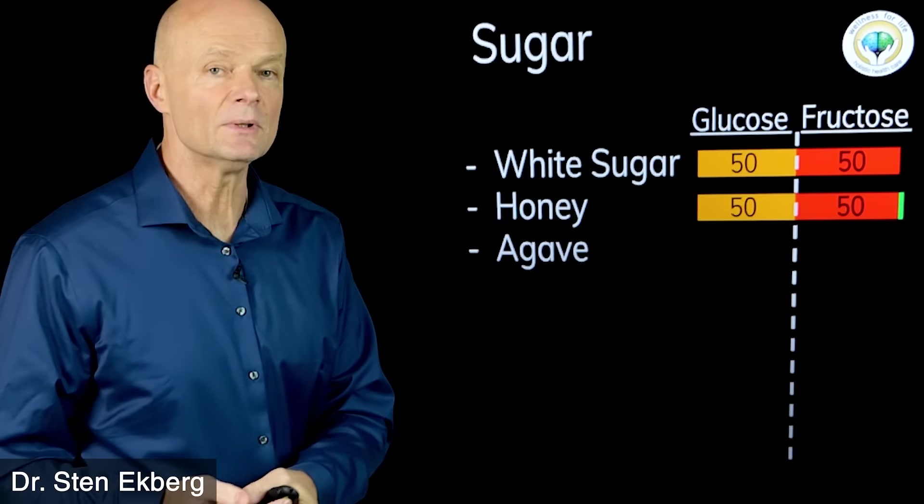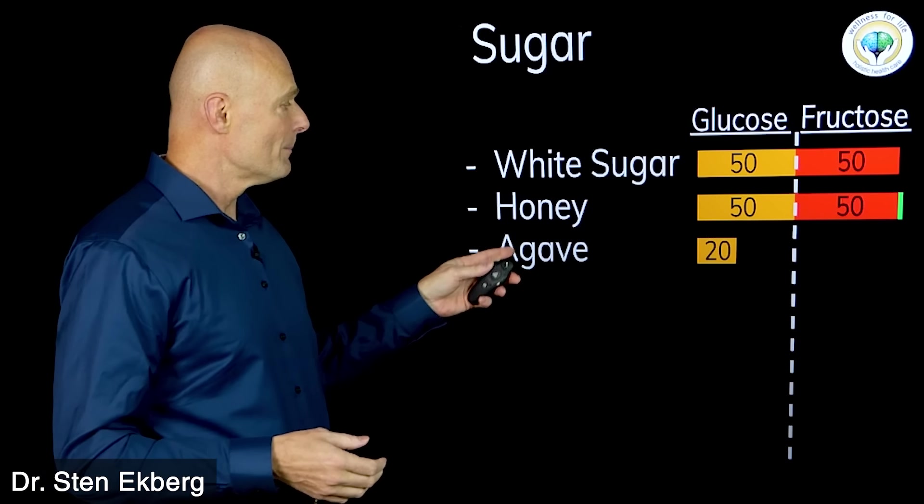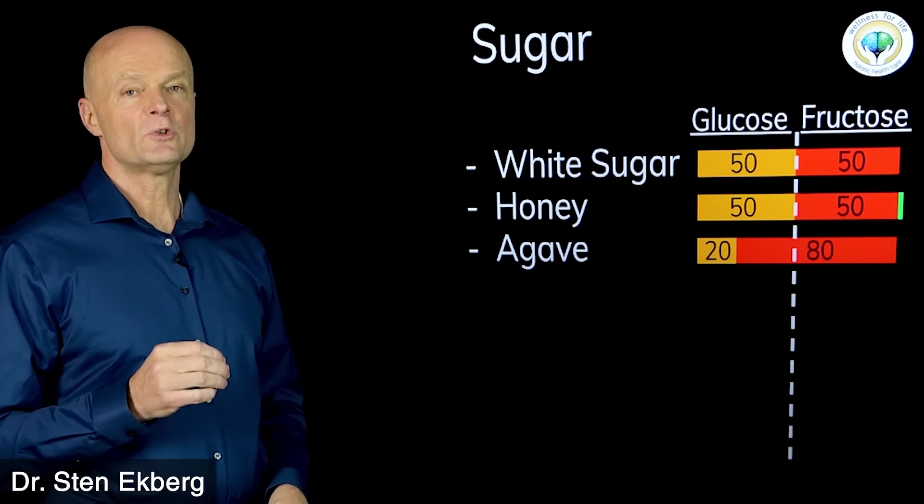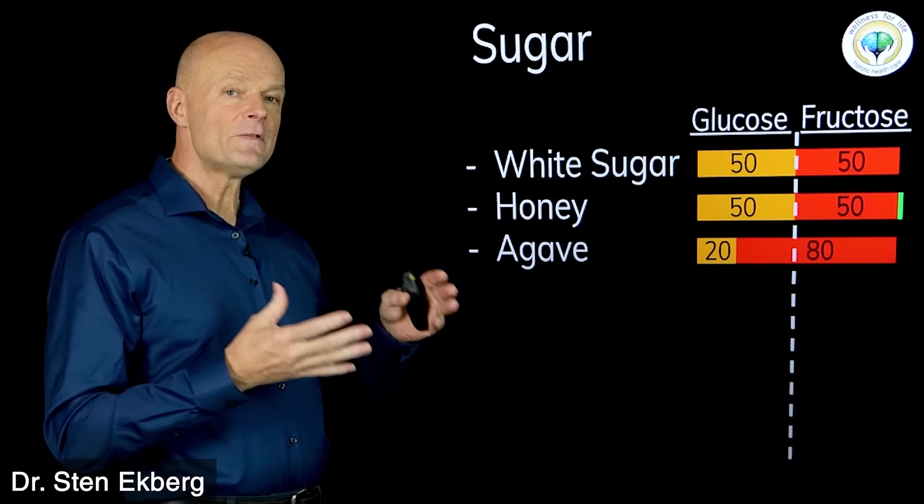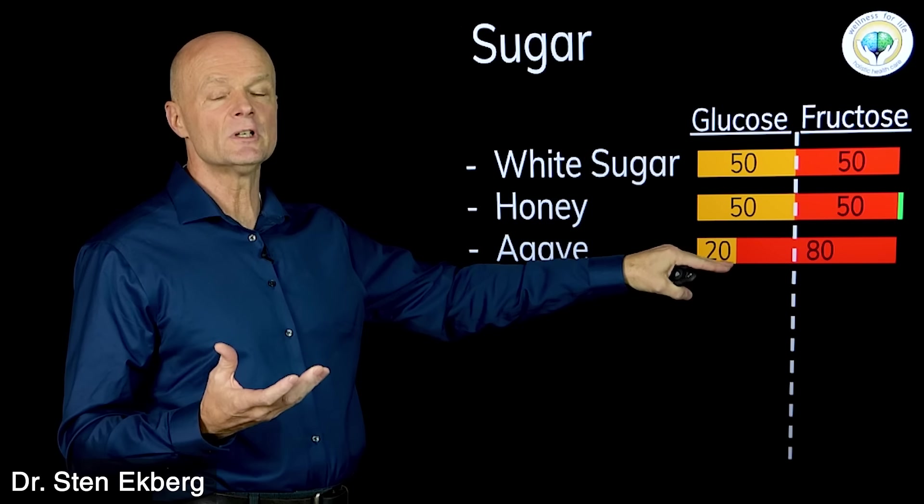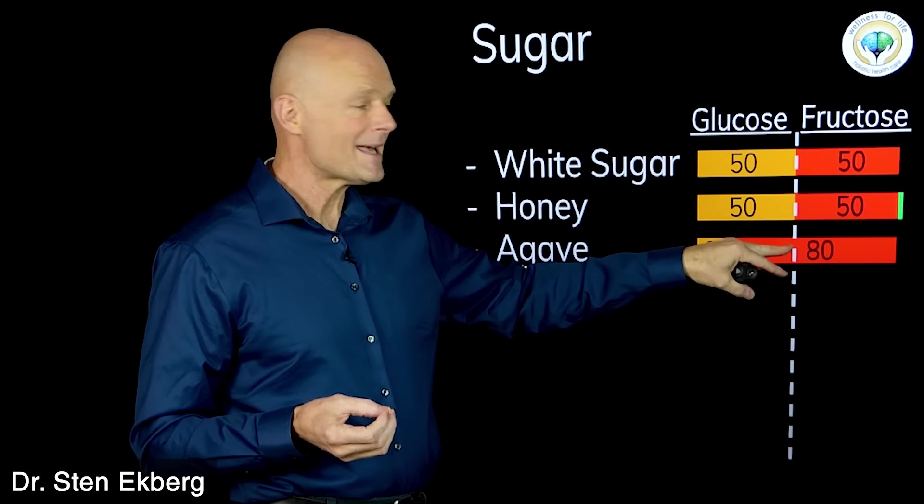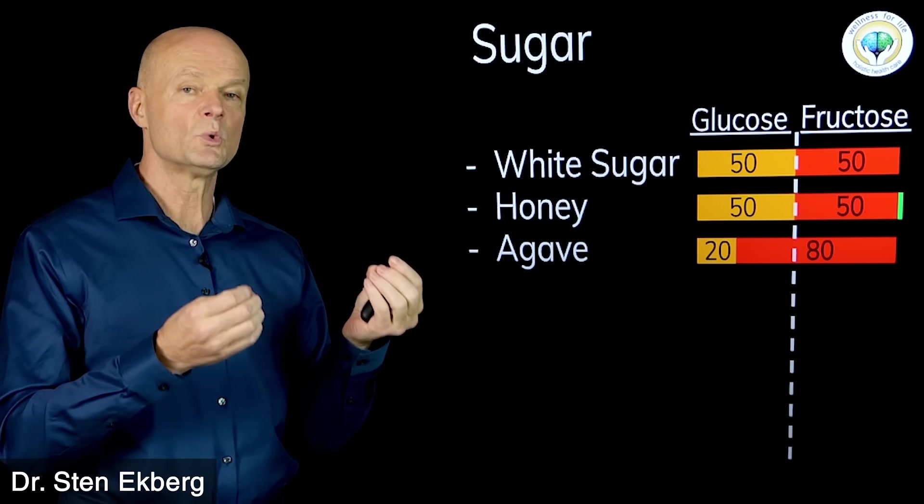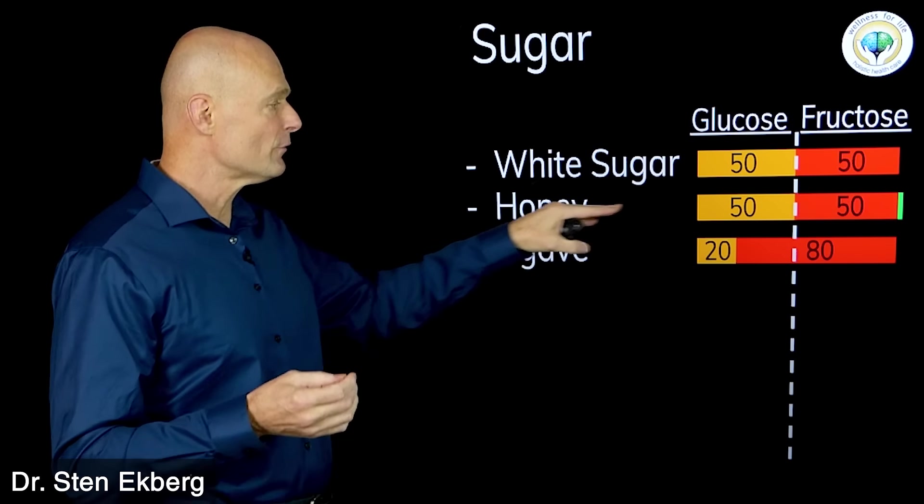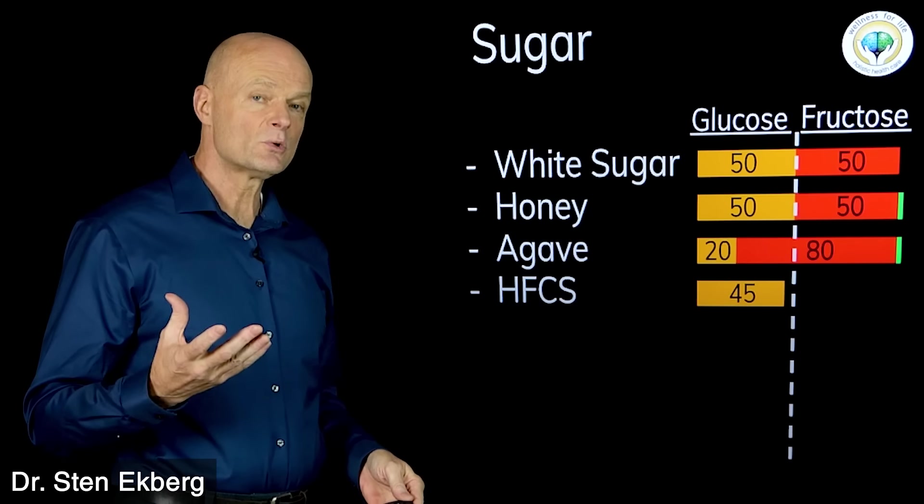Agave - unfortunately a lot of health-minded people think this is healthy because they've been told so in the health food store. But agave has 20 percent glucose and 80 percent fructose. Because of this it doesn't affect blood sugar as much, so you have less of a blood sugar spike and people thought that must be good for diabetics. Well, diabetics also have a fatty liver and agave has 80 percent fructose which will clog up the liver. A lot of people know about high fructose corn syrup - well, this is higher fructose than high fructose corn syrup.